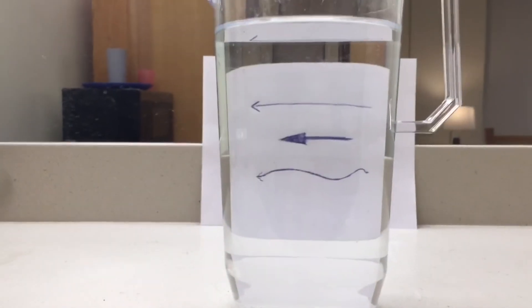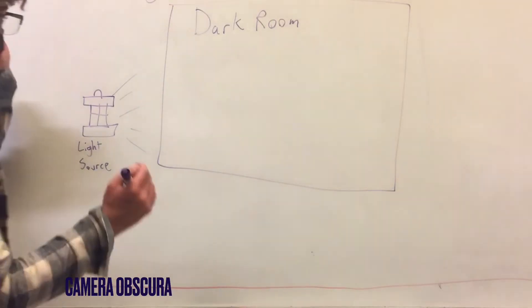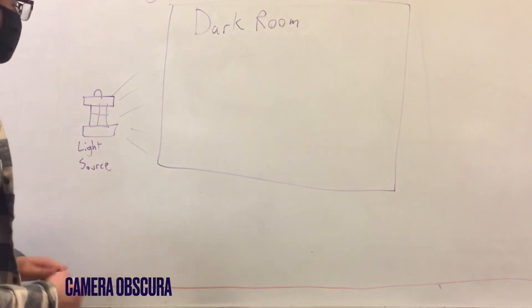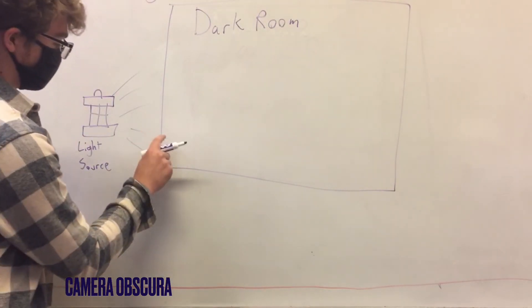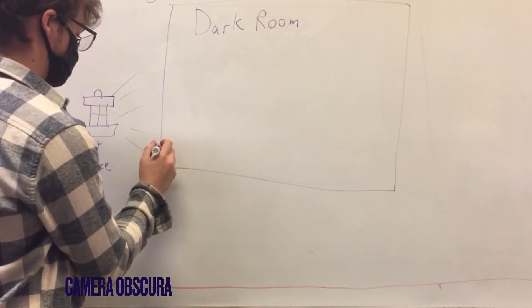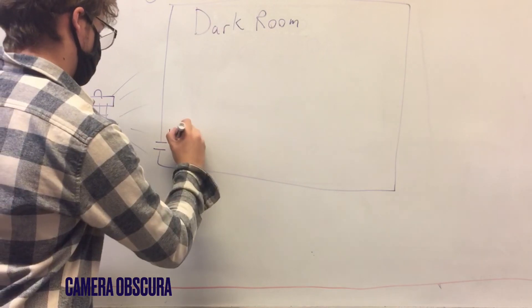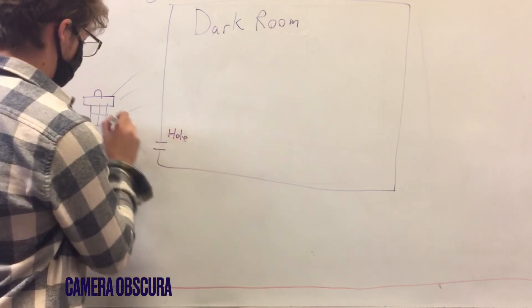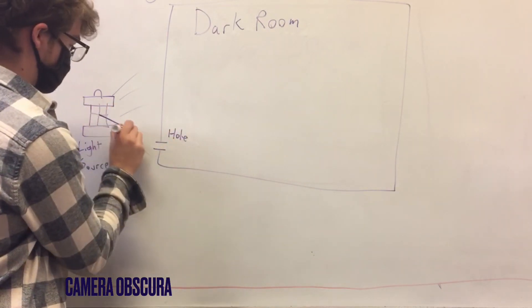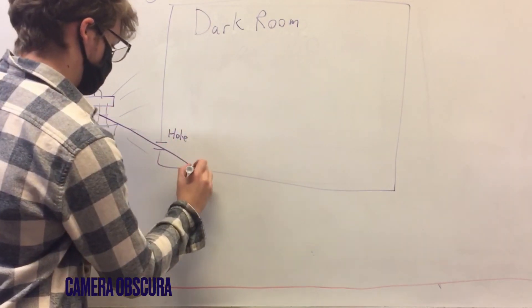The camera obscura's refraction of light would be considered a valid scientific experiment because it explains how light waves travel and how they are perceived by the human eye. The following two drawings give a visual representation of the concepts demonstrated by the camera obscura.